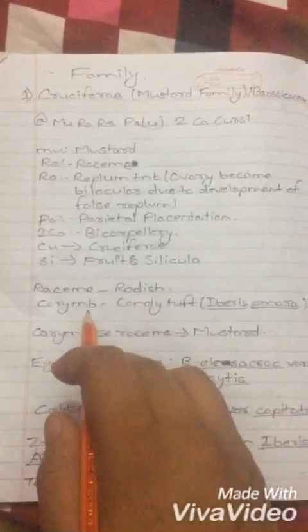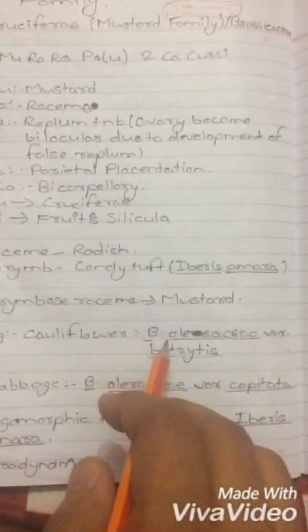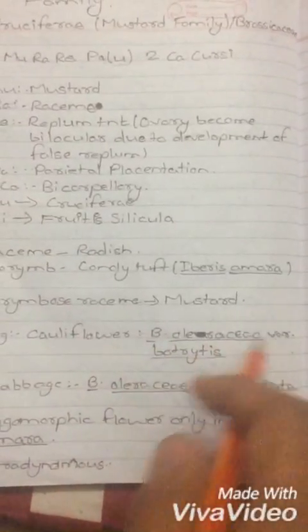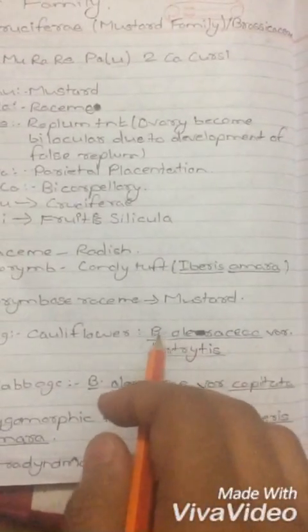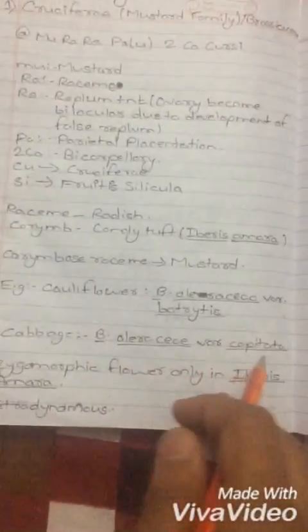For corymb inflorescence, an example is candy tuft, also known as Iberis amara. For racemose inflorescence, an example is mustard. For cauliflower, the scientific name is Brassica oleracea variety botryotis — you can omit 'botryotis' and just write Brassica oleracea variety if you don't remember it during the examination.